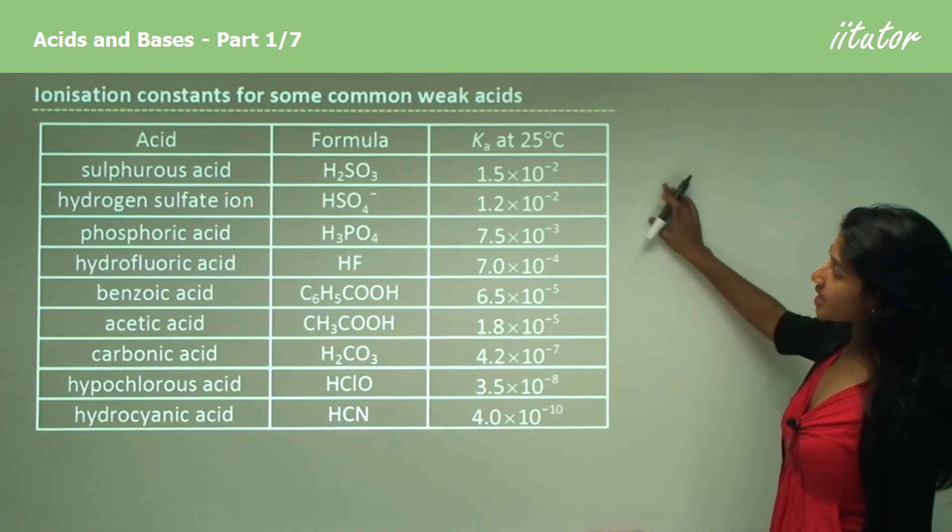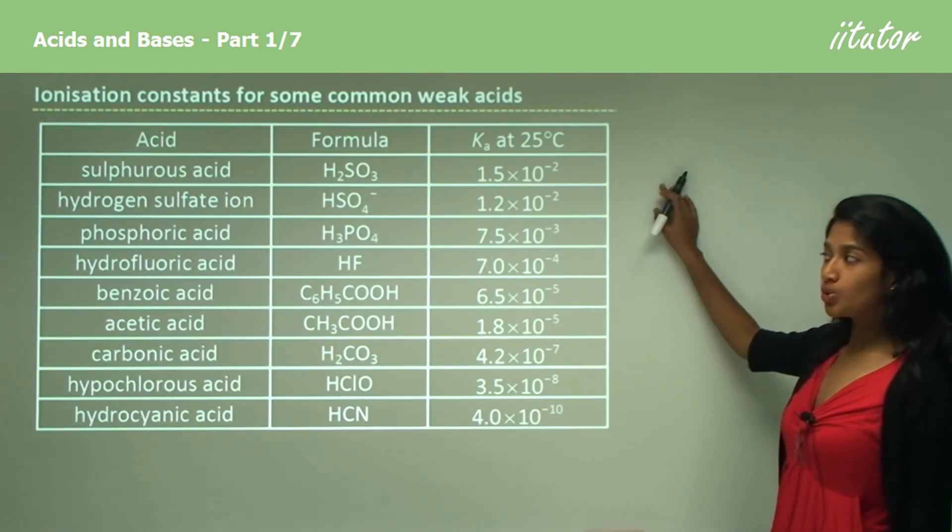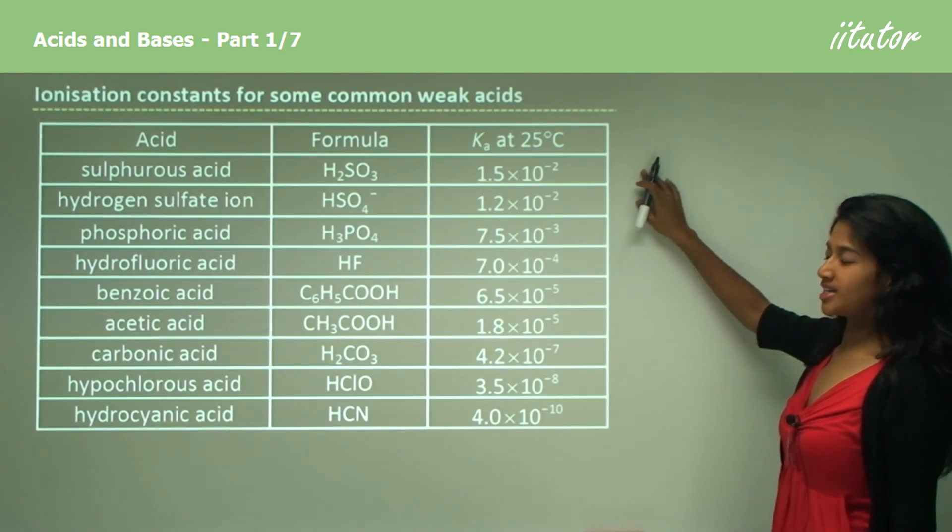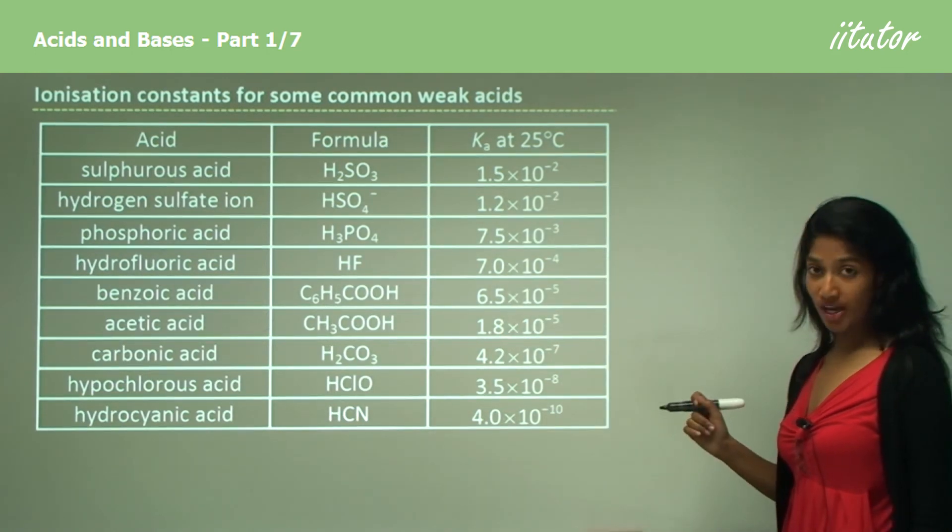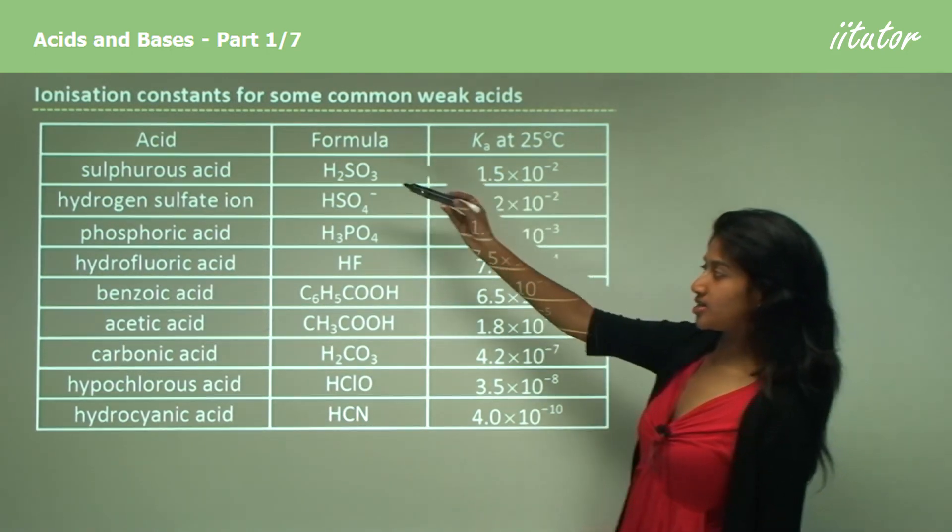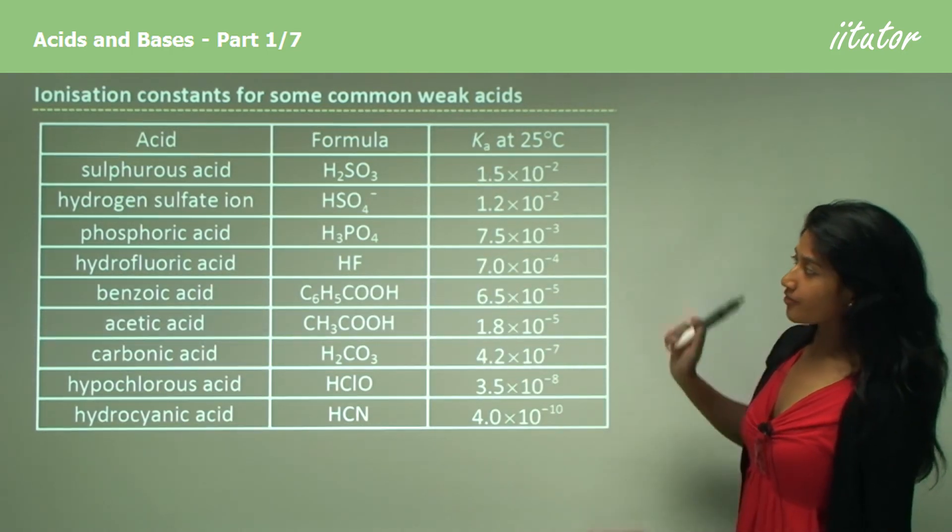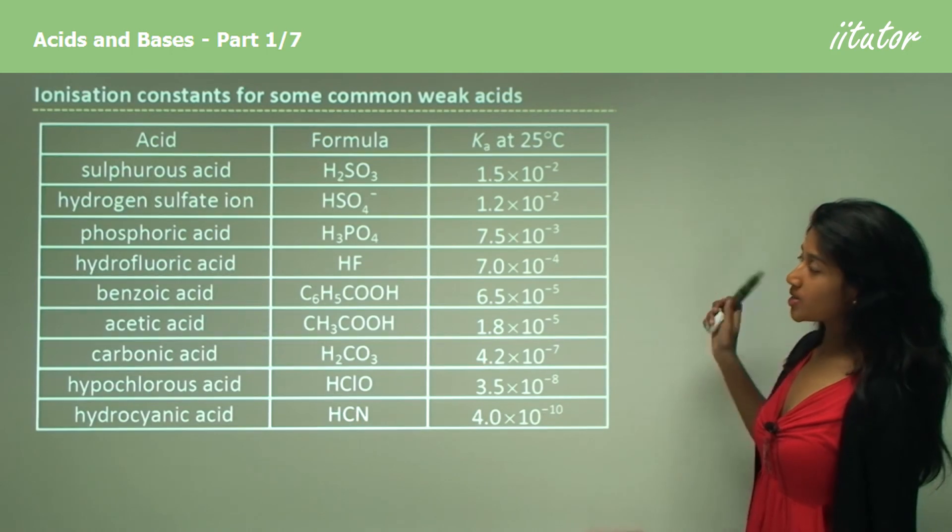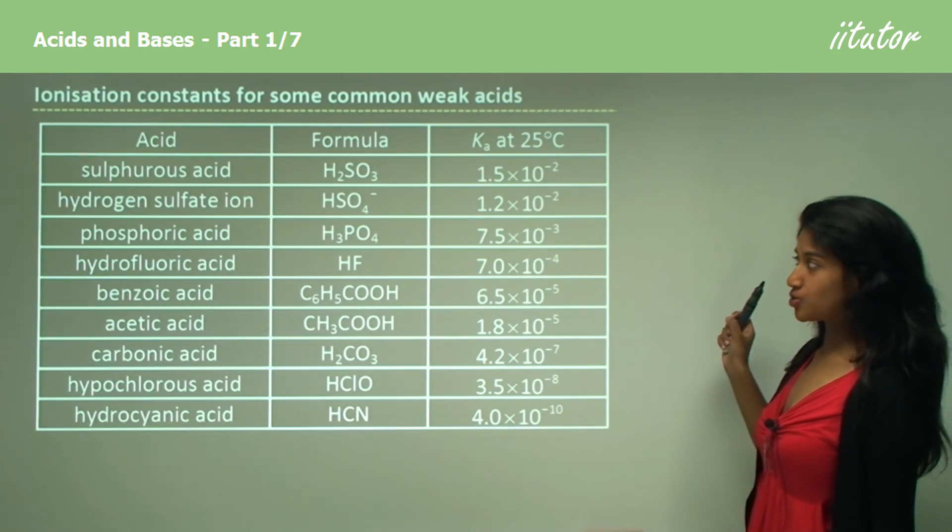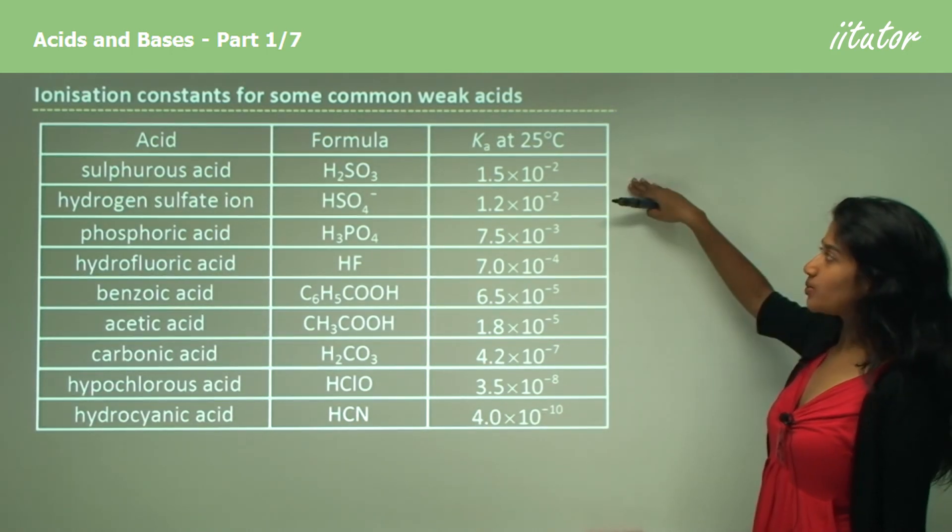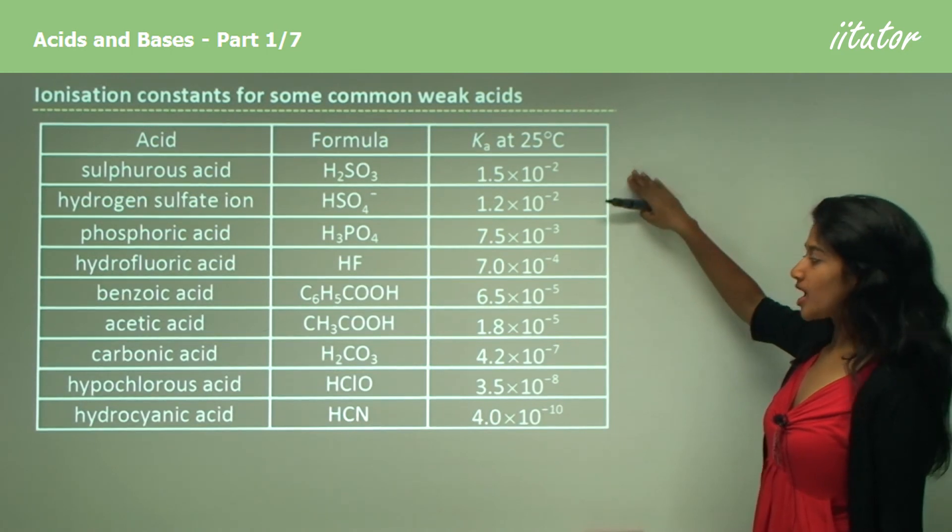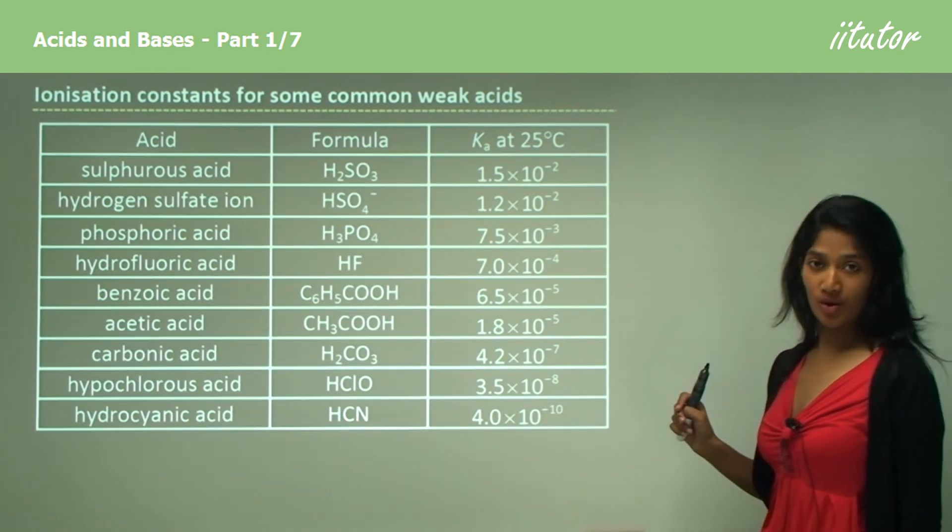Now we'll take a look at some weak acids. You'll be asked to identify these as weak acids in your HSC, so you should know these. You should be familiar with these and their formulas. We have sulfurous acid, which has a formula of H2SO3, and we have the Ka value here. These Ka values can be worked out.